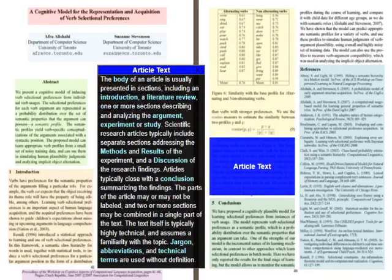The body of an article is usually presented in sections, including an introduction, a literature review, one or more sections describing and analyzing the argument, experiment, or study. Scientific research articles typically include separate sections addressing the methods and results of the experiment and a discussion of the research findings. Articles typically close with a conclusion summarizing the findings. The parts of the article may or may not be labeled, and two or more sections may be combined in a single part of the text.